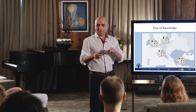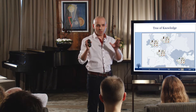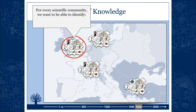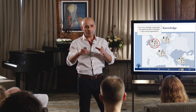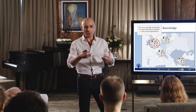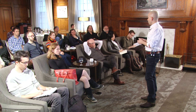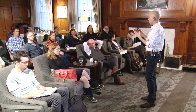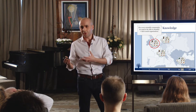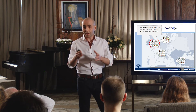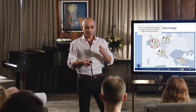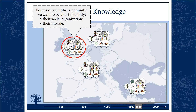Wouldn't it be great to have software that would let you click on any one of these communities and see both the social organization — the members, institutions, how things were organized, how knowledge was produced and taught — including the science production and university system, and also, importantly, the content of their mosaic: the beliefs they had about the world and the methods they employed in evaluating those beliefs.